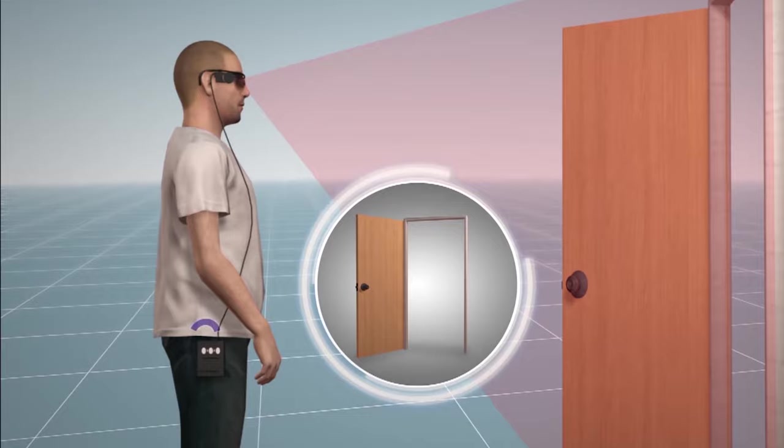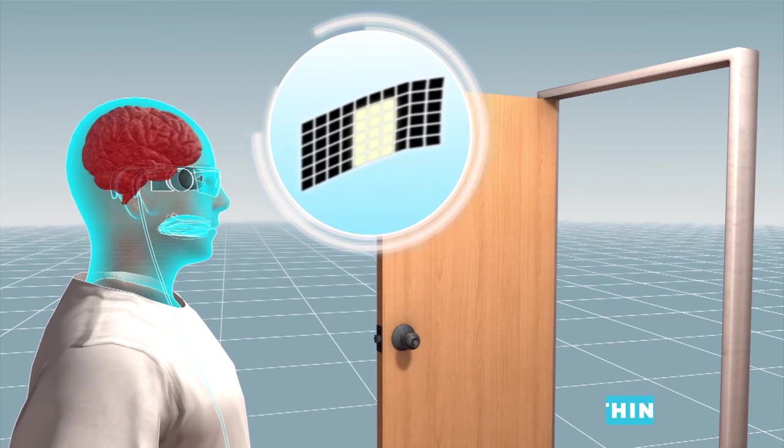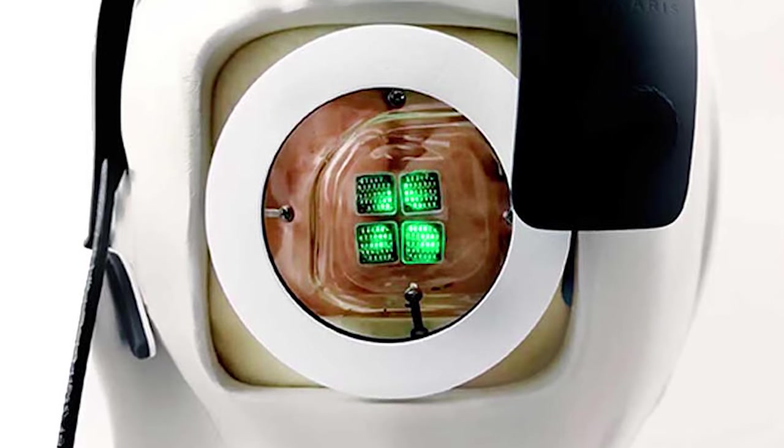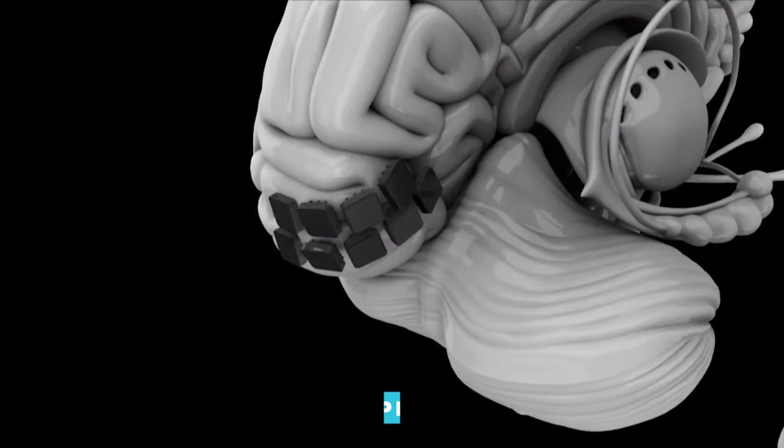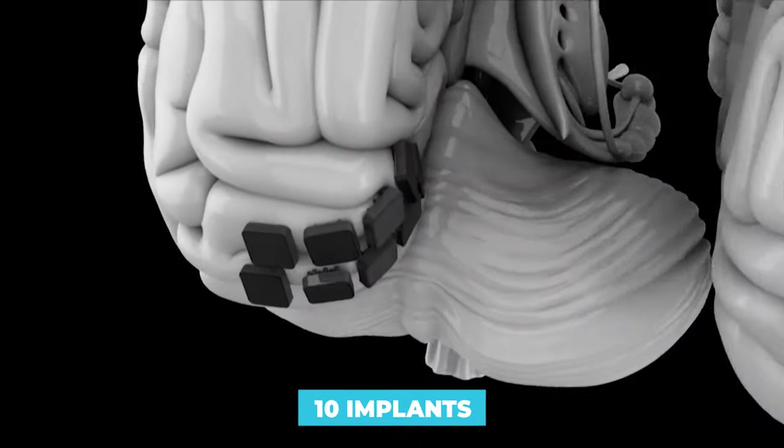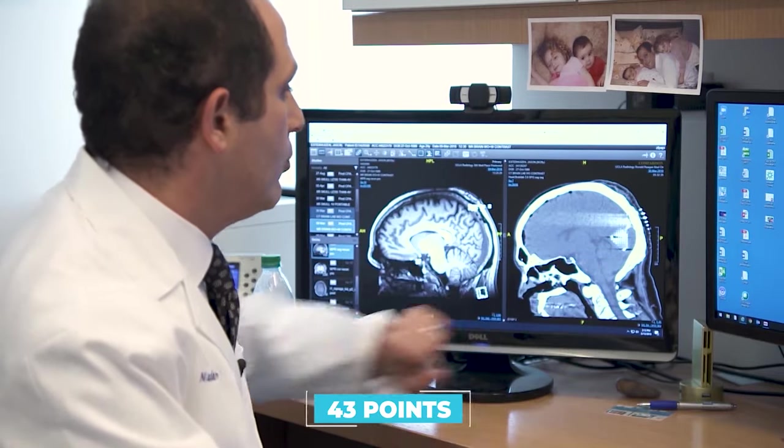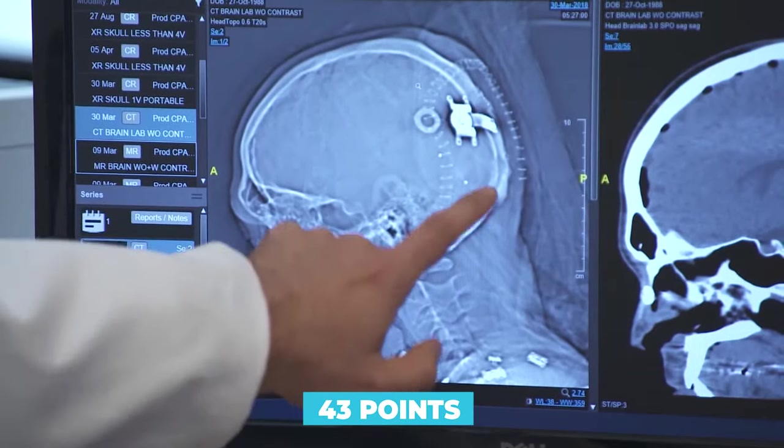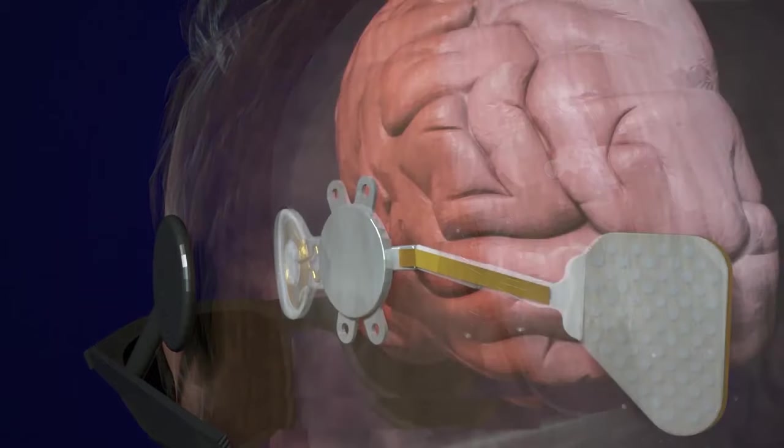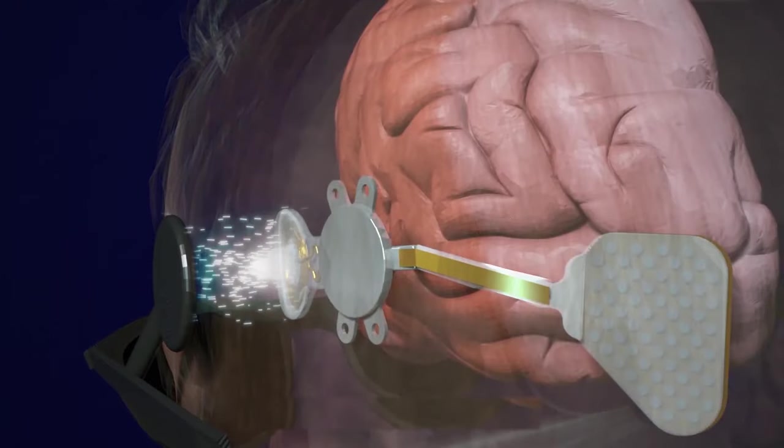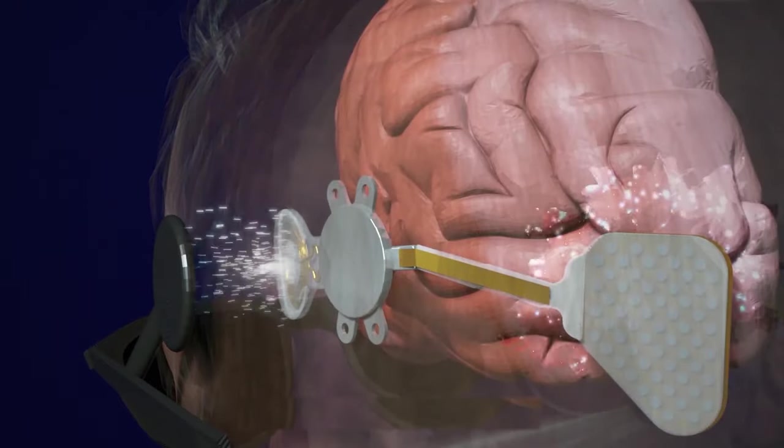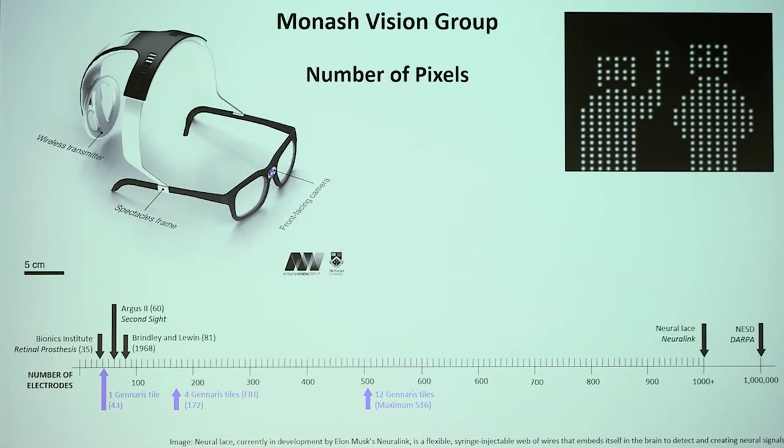The wireless transmitter will transmit the output from the video processor into a set of 9 millimeter thin tiles that have to be transplanted into the brain. There are almost 10 implants that will stimulate up to 43 points in the visual cortex. The tiles contain electric circuits that will convert the data from the wireless transmitter into electric impulses for the brain.